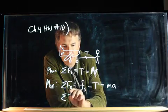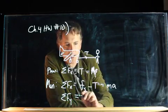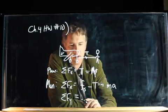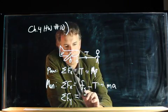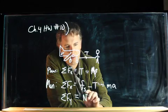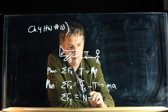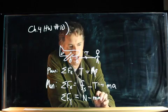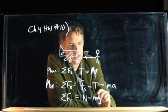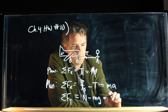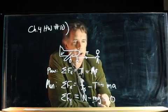We also have the sum of the forces in the y direction on the man, is equal to the normal force up, minus mg down, is equal to zero. The man is not going up or down.